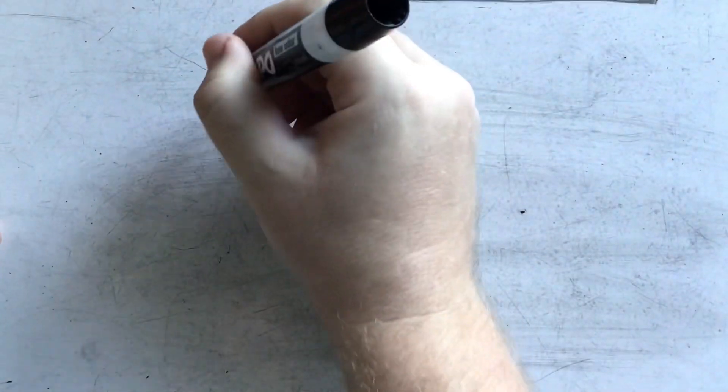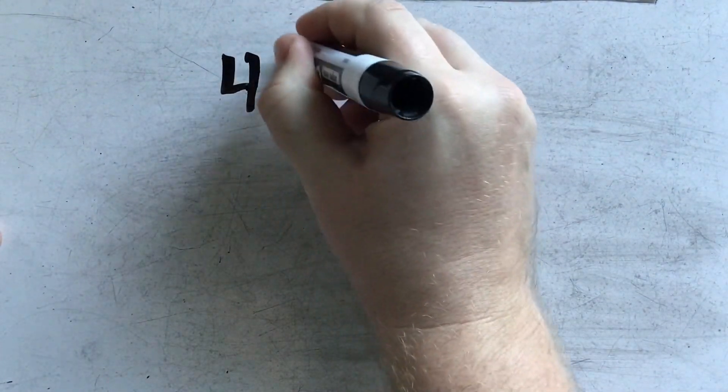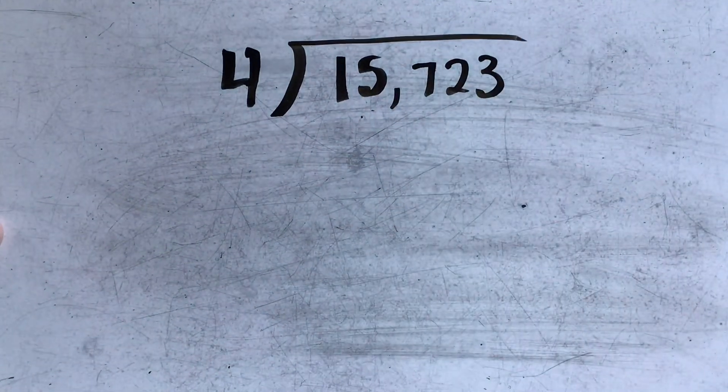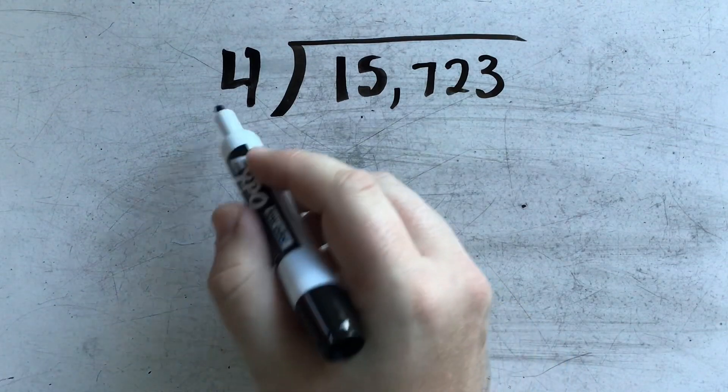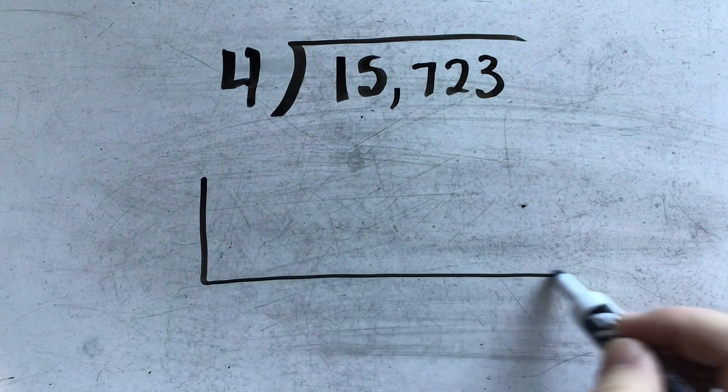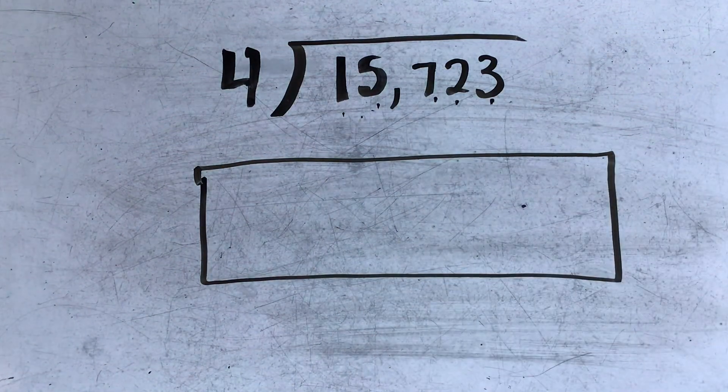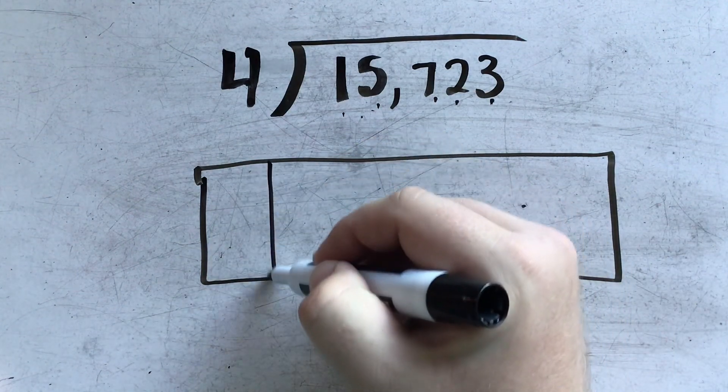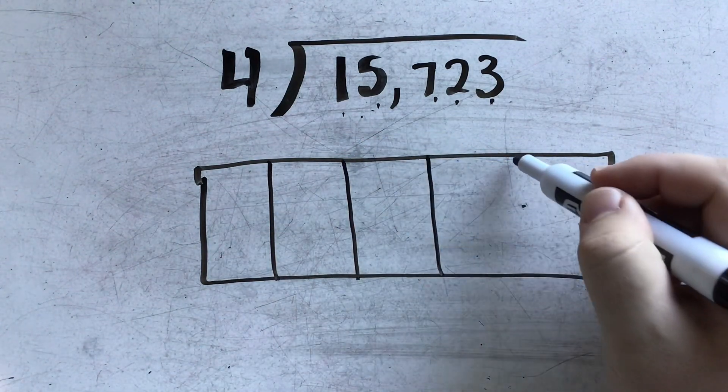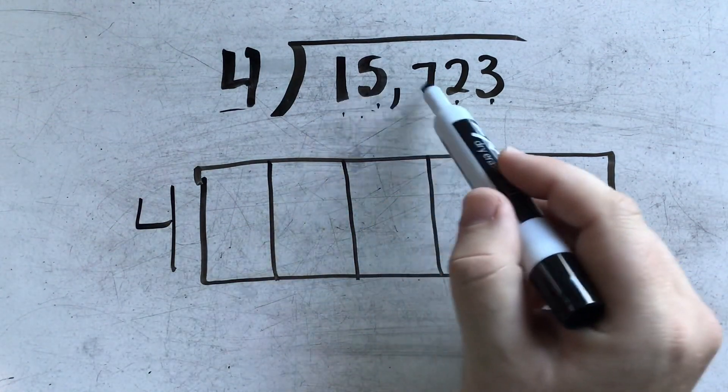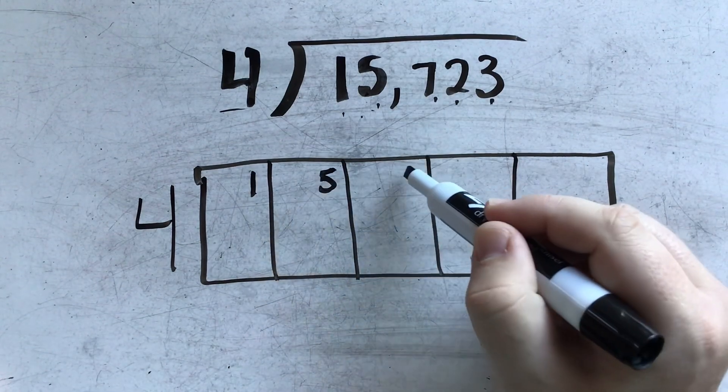Let's try a couple more. Alright, so if I had the problem 15,723 divided by 4, again, what I'm going to do is my rectangle needs to include a box for each digit that I have in my dividend. So in this case, I need 5 boxes. My divisor is always going to go on the outside, and each one of these digits is going to go in the top right-hand corner.